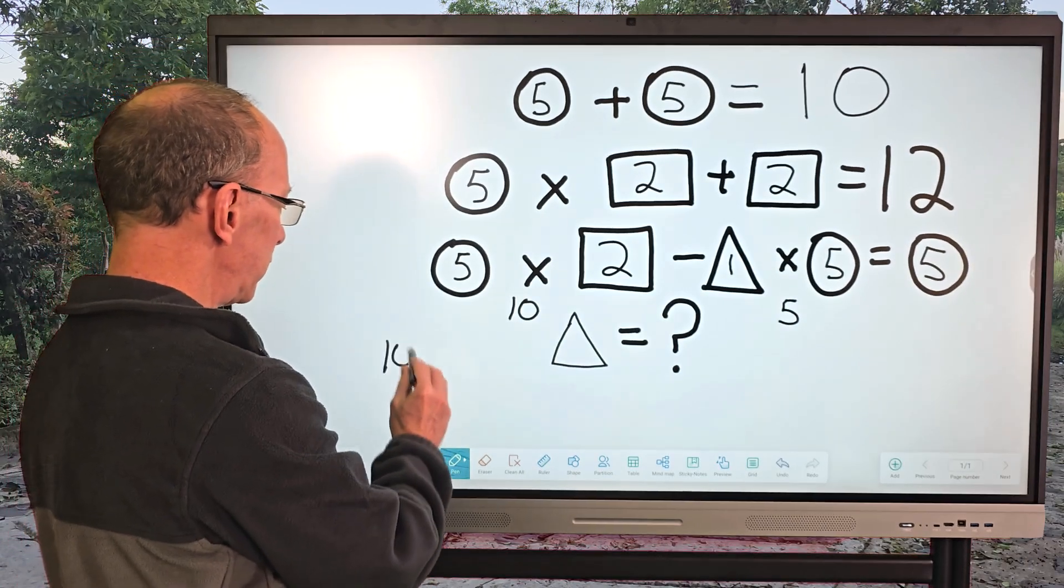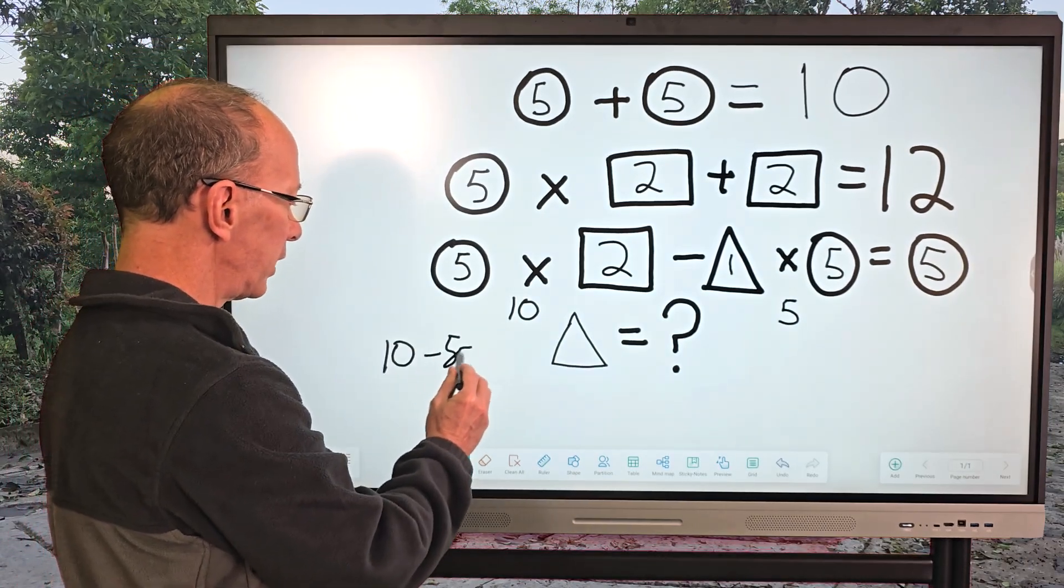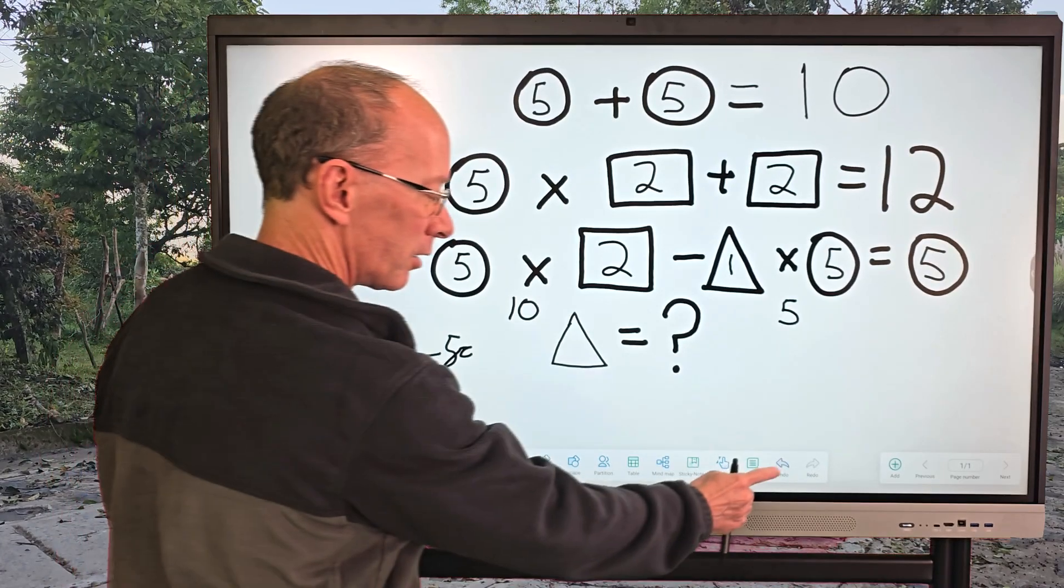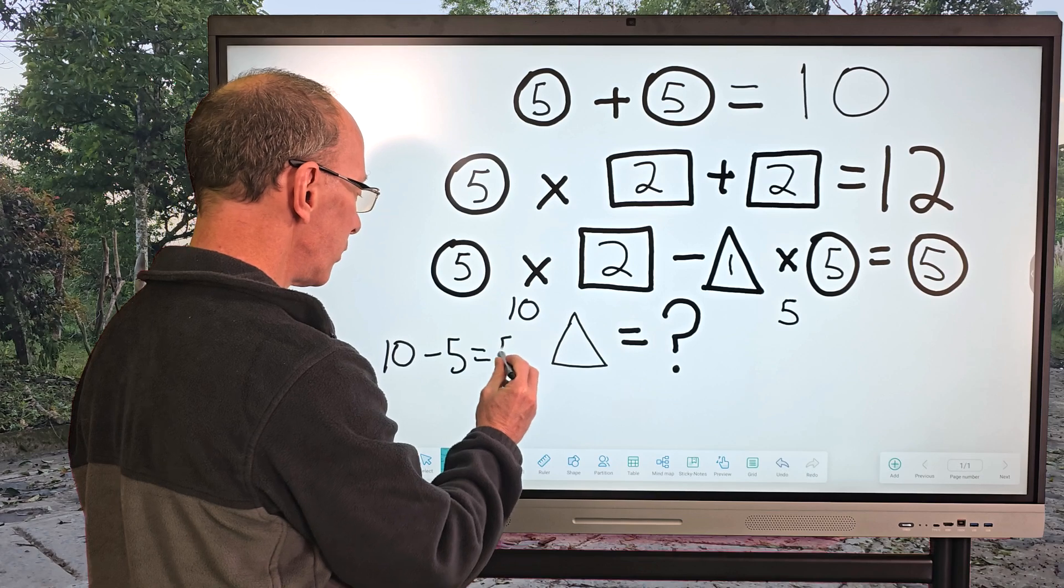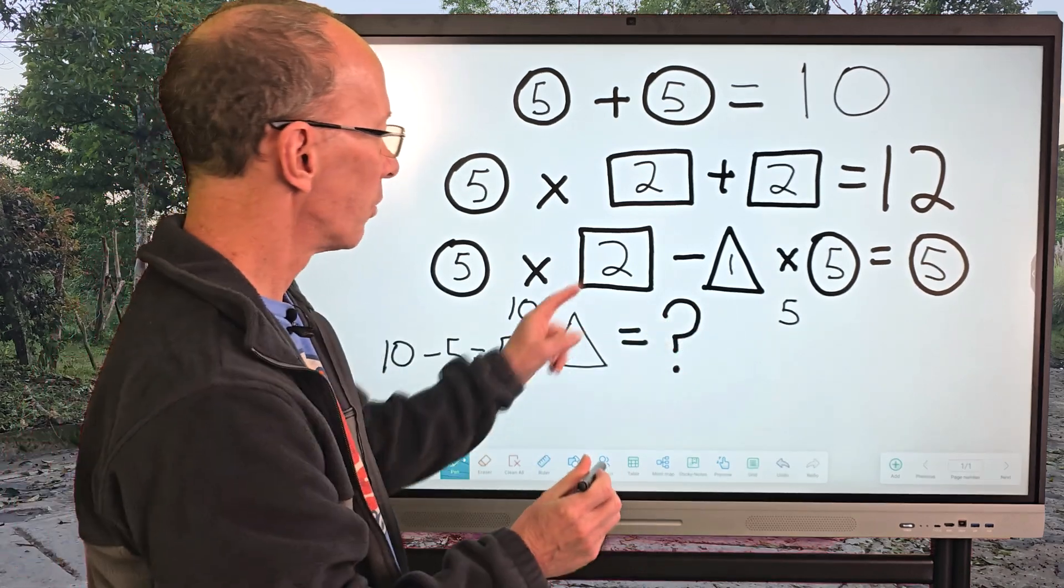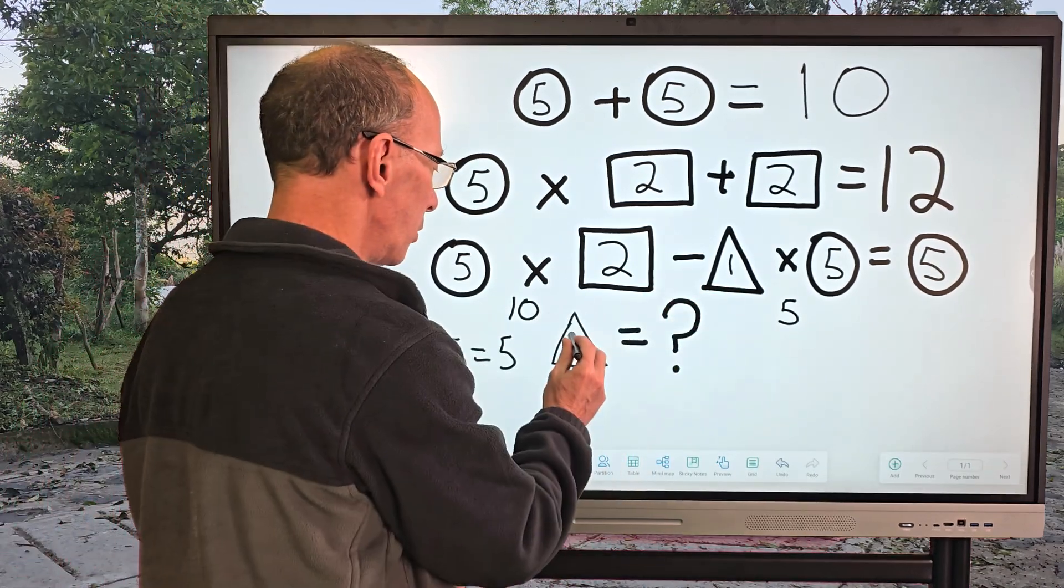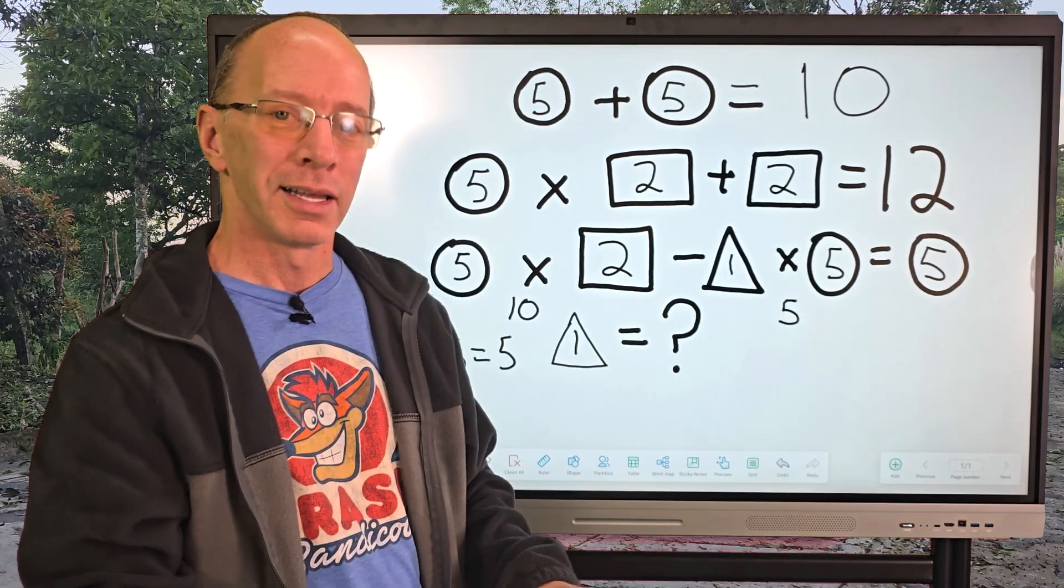and then 10 minus five. I can show you right here. 10 minus five. Let's go back here a little bit. Nice undo there. 10 minus five equals five. So our triangle would be one. How'd you do?